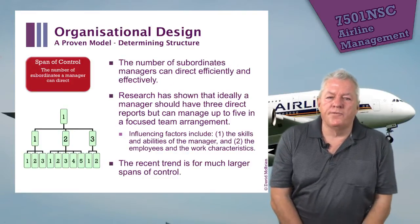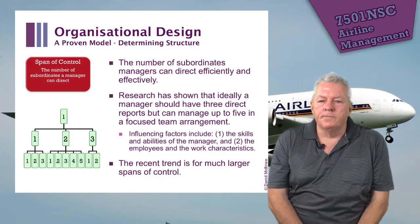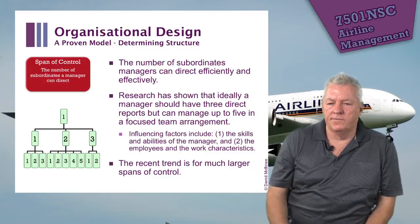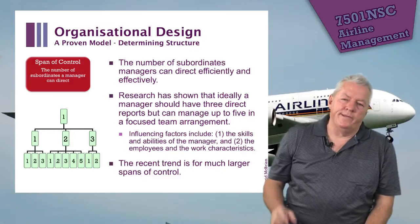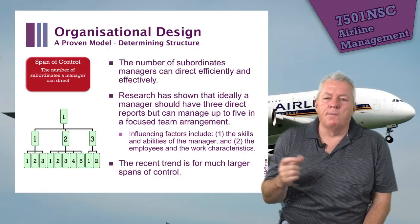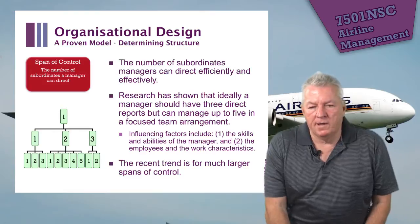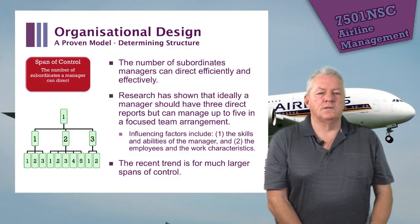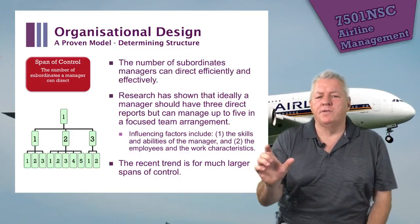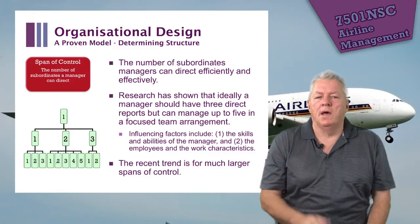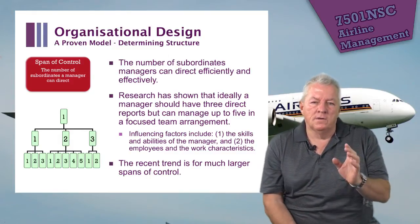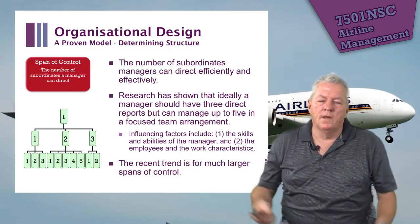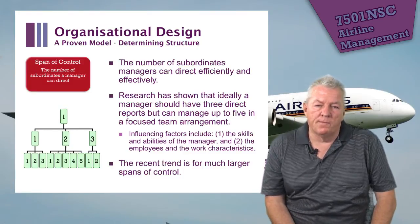Span of control refers to the number of subordinates a manager can direct. Studies show that three direct reports is the optimum, though up to five can be handled in a focused team arrangement. There's a trend in modern organizations — thinking of Qantas at one stage where the CEO had about 15 direct reports — which under the span of control model is much too broad, though this is happening more and more in contemporary organizations.